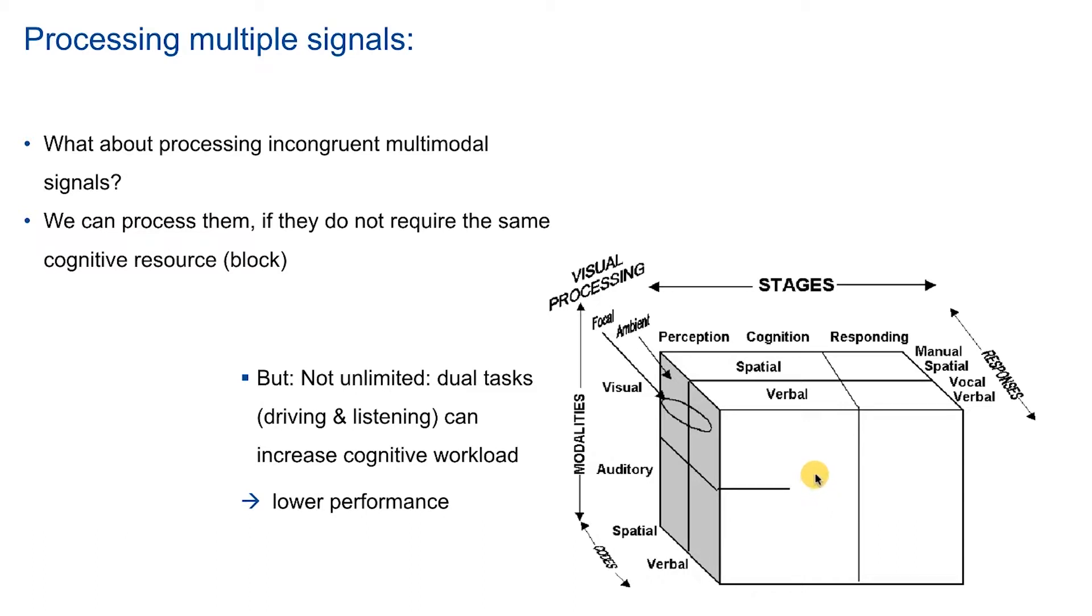The whole idea is if we have to deal with different tasks, with multiple tasks during the same time, we might use or actually do this successfully by using the different cognitive resources that we have. For example, if we would read a text, we might still walk during the same time because this requires different cognitive resources which do not conflict.